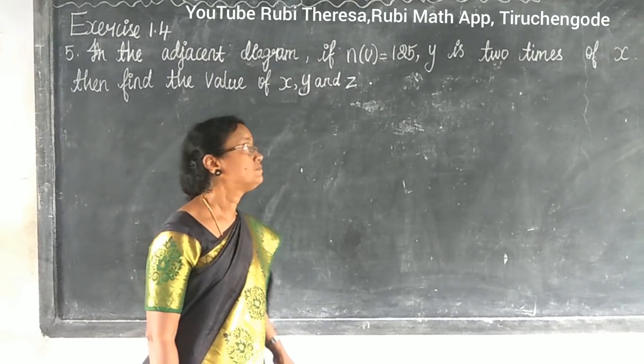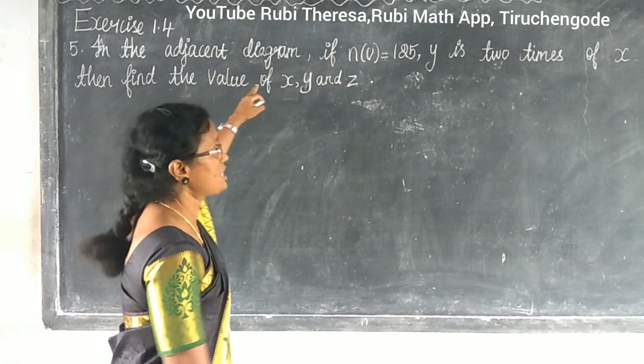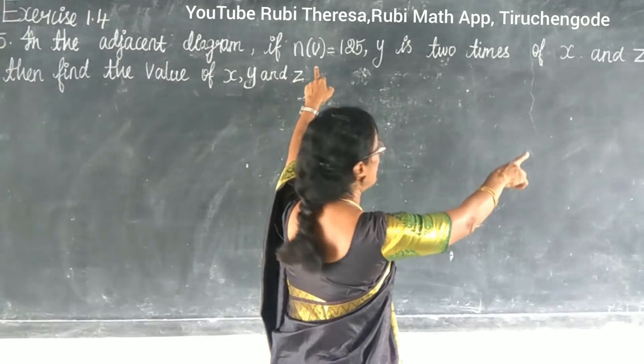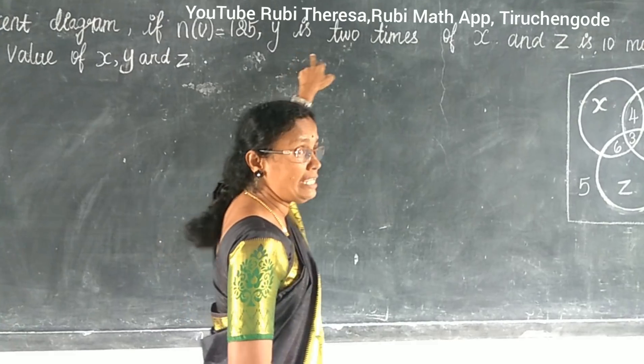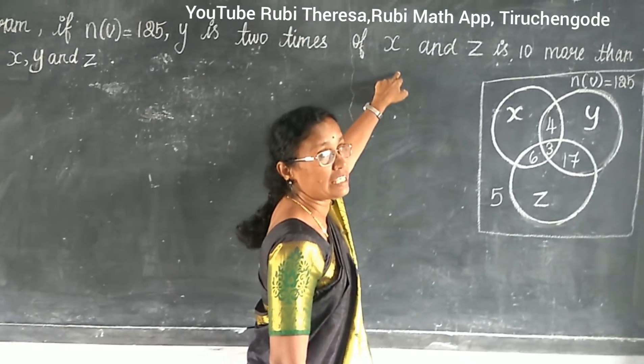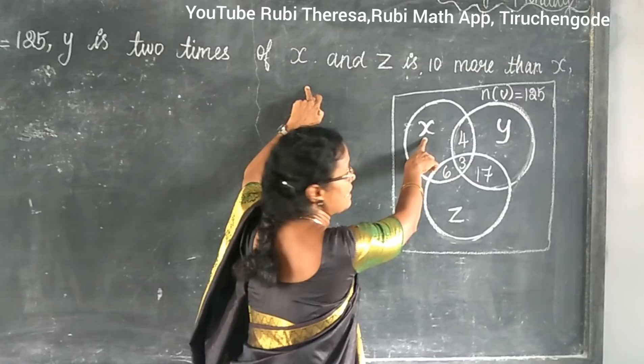Pappu listen here. In the adjacent diagram, n of U equal to 125. Y is 2 times of X. You see where is X?